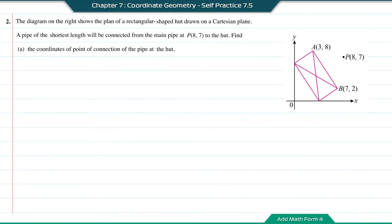Question number 2. The diagram on the right shows the plan of a rectangular shaped hut drawn on a Cartesian plane. A pipe of the shortest length will be connected from the main pipe at P(8,7) to the hut. Find (a) the coordinates of the point of connection of the pipe at the hut.